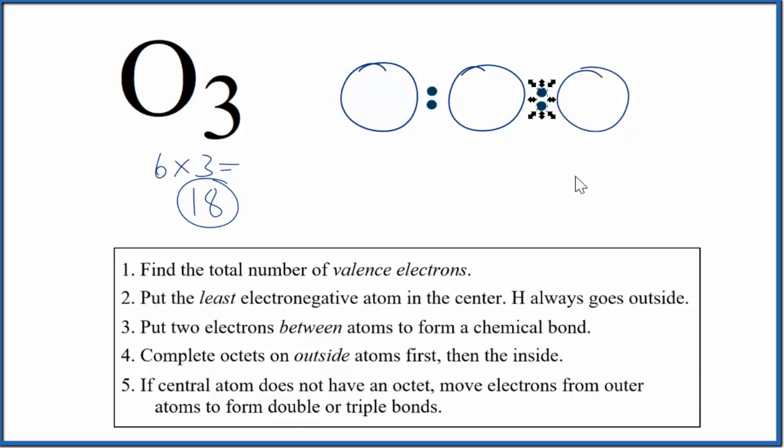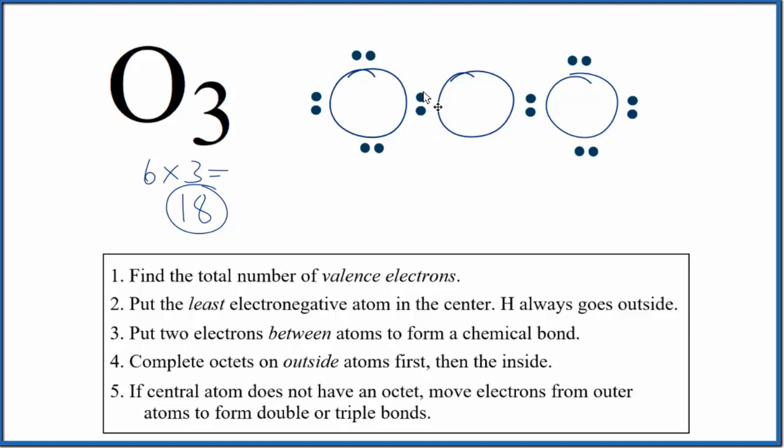Remember we have 18 total. Now we'll complete the octet on the outside oxygens. We've used 8 plus 8, which is 16. We have two more electrons to place right here, and now we've used all 18.